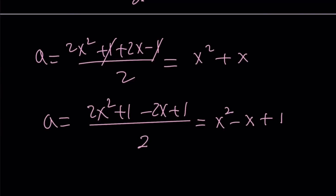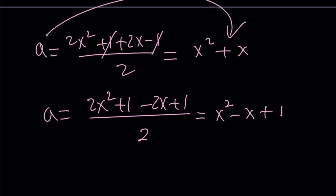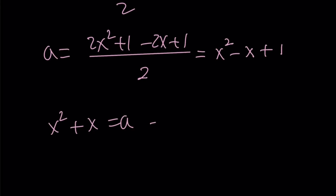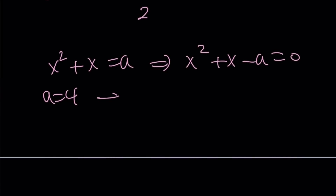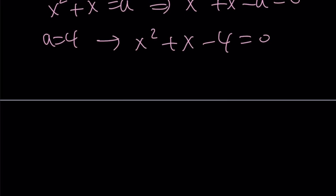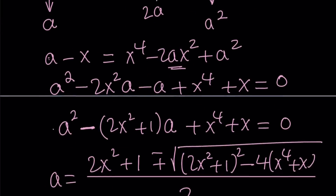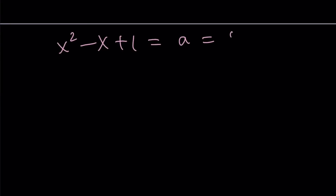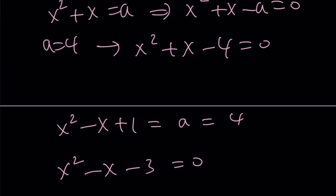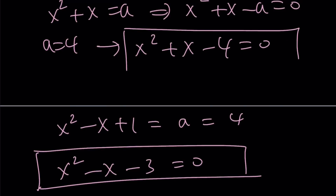Now we're going to write x in terms of a. We have a equals x squared plus x, so x squared plus x minus a equals 0. But a equals 4, so substituting gives us x squared plus x minus 4 equals 0. For the second root, x squared minus x plus 1 equals 4, giving x squared minus x minus 3 equals 0. Both equations will give us solutions, but we have to check that they satisfy the original radical equation.